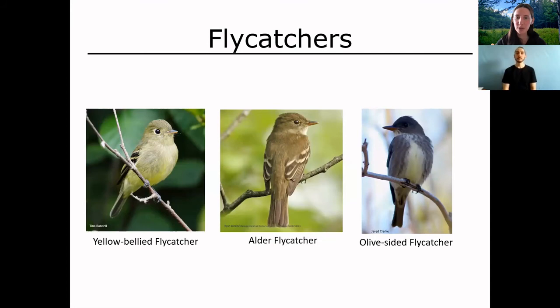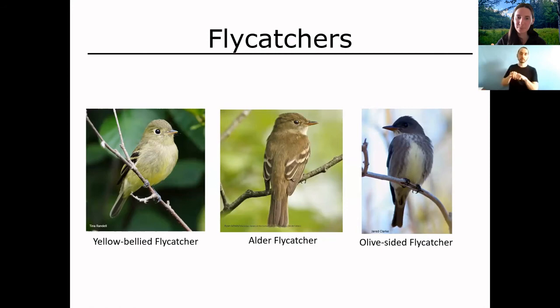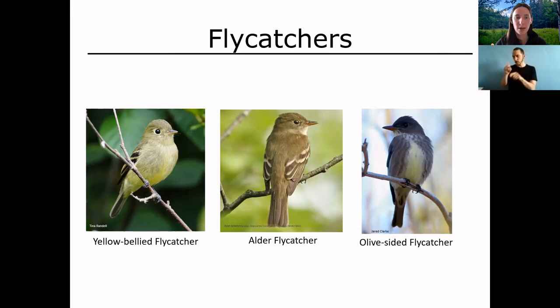Flycatchers are smaller birds that do exactly what their name says — they catch flies. You'll find them perching on a little branch or twig, spotting an insect in the air, flying out to catch it, then returning to that same branch or nearby to eat it — and they'll repeat that activity for hours. Flycatchers are also difficult to distinguish by looks because they're often quite similar to each other. Learning their different sounds can sometimes help, although in Newfoundland we don't have too many flycatcher species, making it a bit easier to tell them apart by sight.